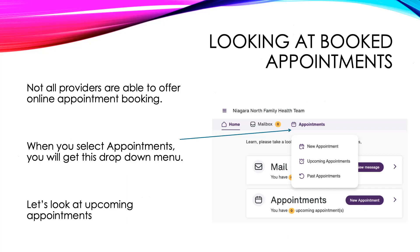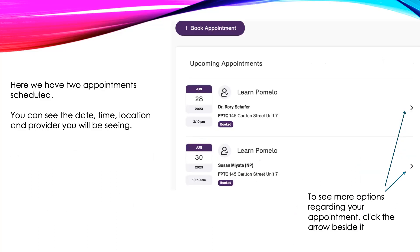Next, we're going to look at the appointment section. Not all providers are able to offer online booking with Pomelo. When you select Appointments, you will get a drop-down menu. Let's look at upcoming appointments. Here, we have two scheduled appointments for Mr. Pomelo. He is scheduled with his family doctor on June 28th and a nurse practitioner on June 30th.